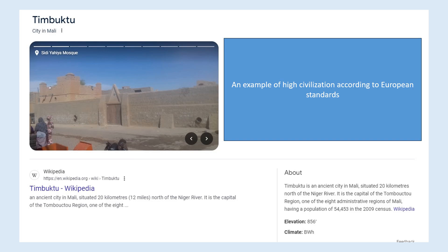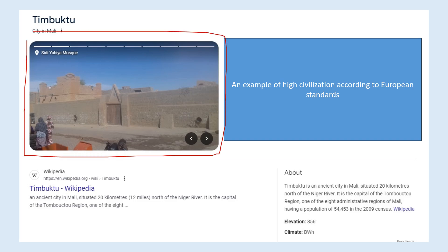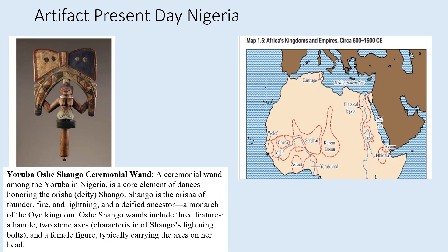Timbuktu — just a Google search. We did look at an image from the textbook; here we have an image from Google. Another artifact left behind. As it mentions here, Shango is the orisha of thunder, fire, and lightning, depicted in the prior image of Oya's portrayal. Here we have this ceremonial wand. We can possibly make an assumption about the figure's sex just by looking at physical features.